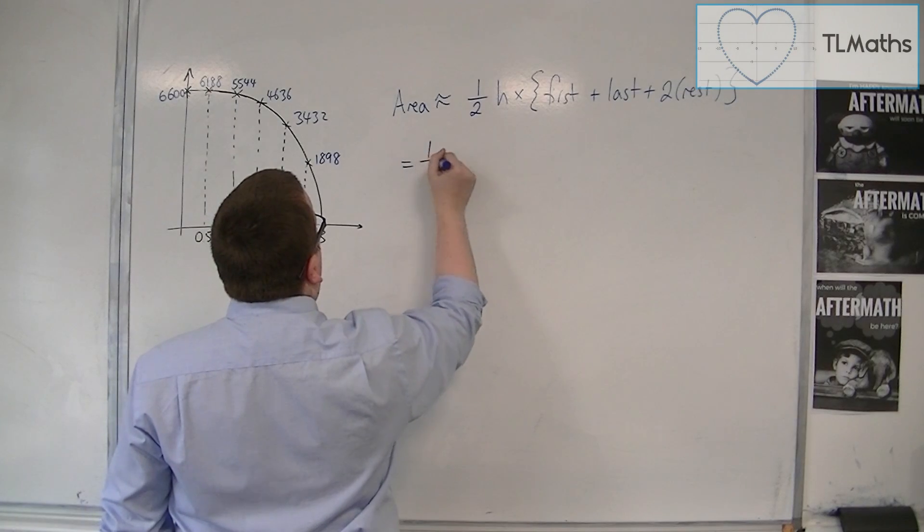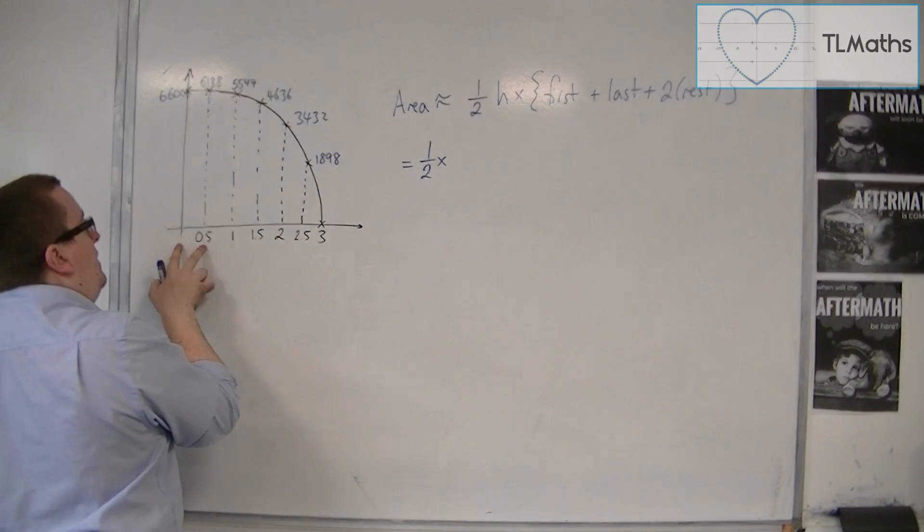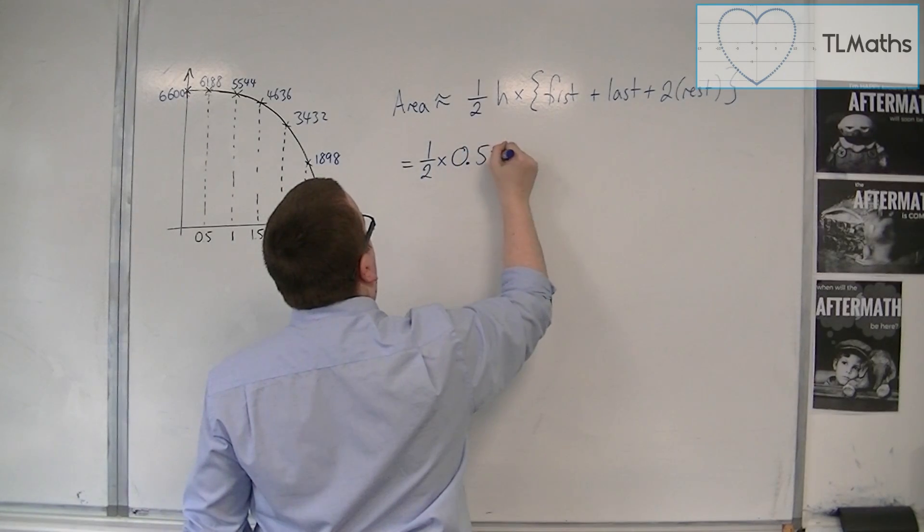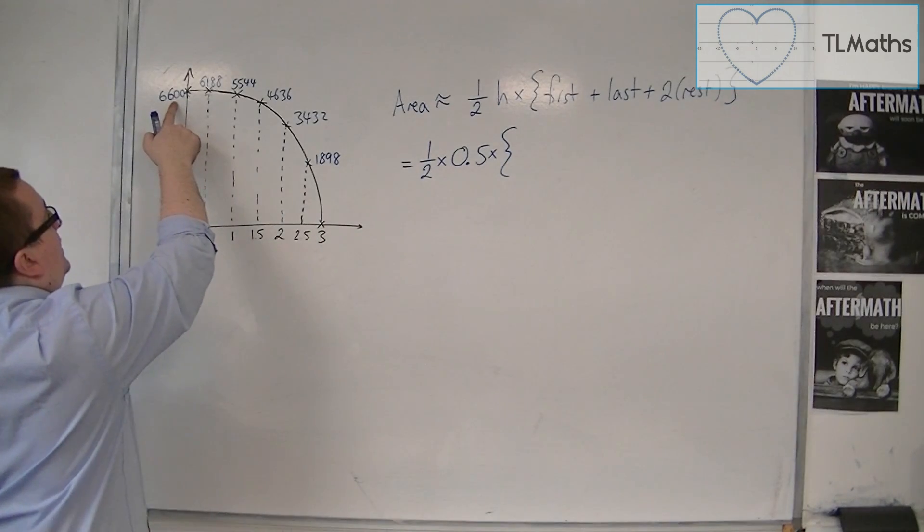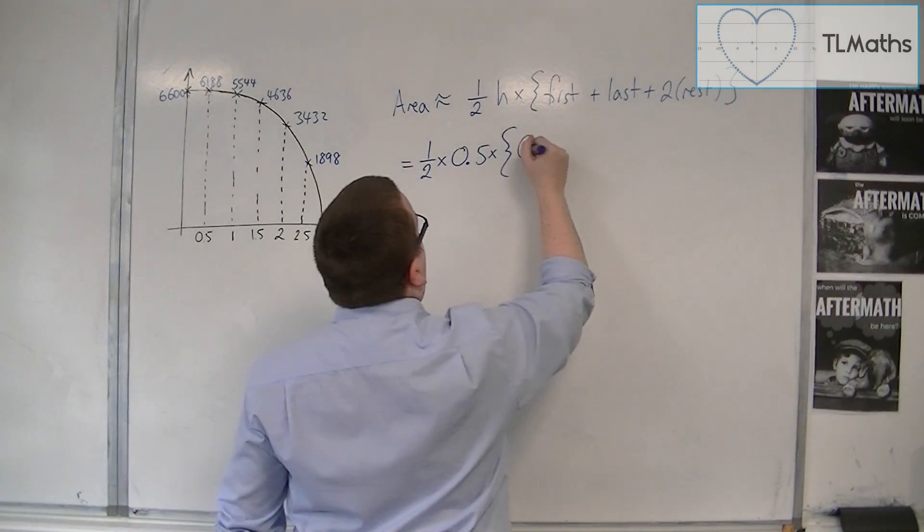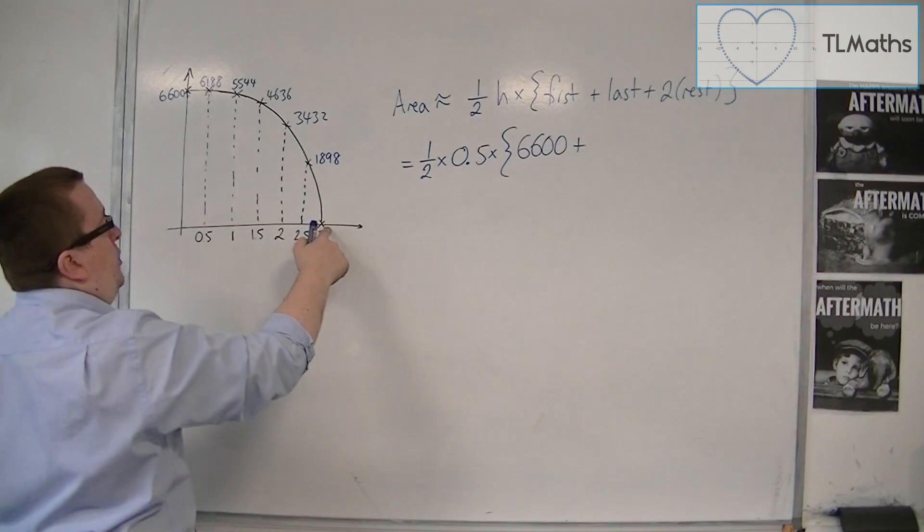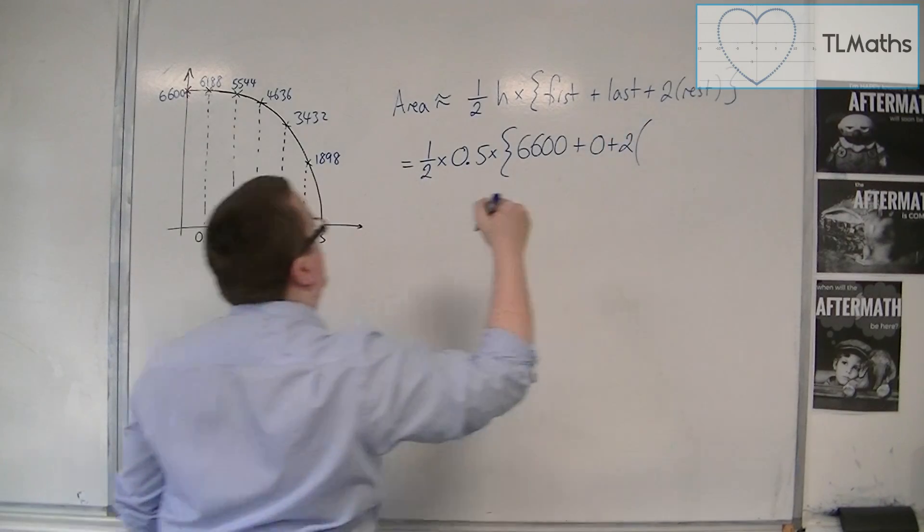So we've got 1/2 times h. Now h is the strip width, which in this case is a half. So 0.5 times by the first. Now the first one is the 6600. You're always working with the y coordinates here. Plus the last, which is 0. Plus 2 lots of the rest.